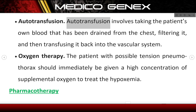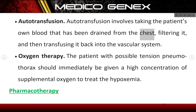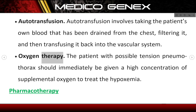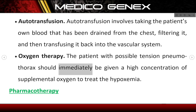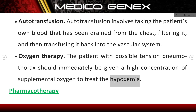Autotransfusion involves taking the patient's own blood that has been drained from the chest, filtering it, and then transfusing it back into the vascular system. Oxygen therapy — the patient with possible tension pneumothorax should immediately be given a high concentration of supplemental oxygen to treat the hypoxemia.